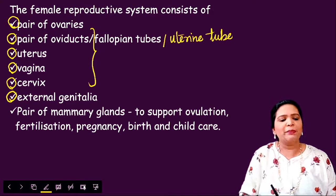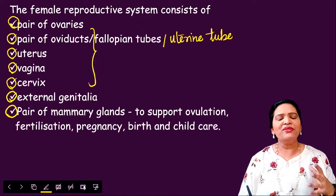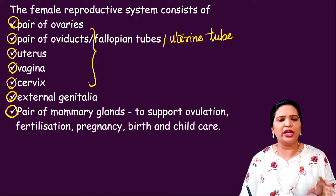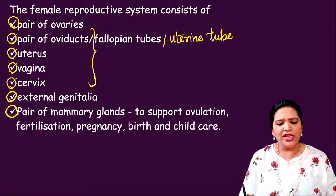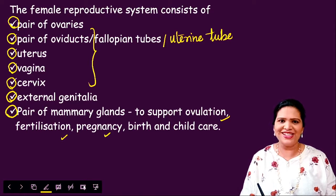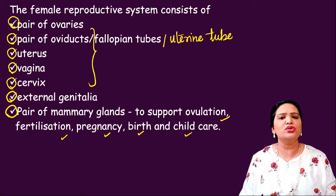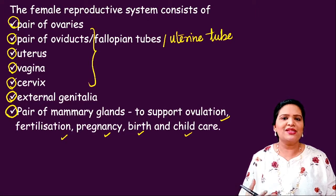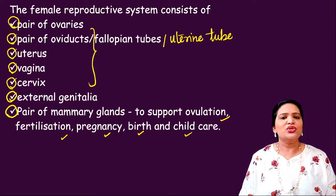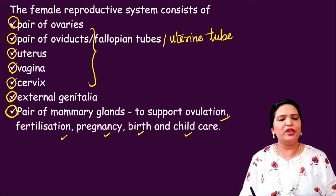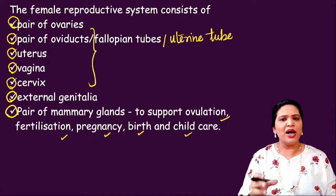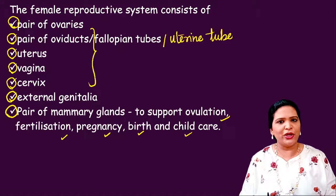There are also external reproductive structures called external genitalia, which include labia majora, labia minora, hymen, and clitoris. Additionally, there are a pair of mammary glands. Mammary glands are included in the female reproductive system because they play a major role in supporting ovulation, fertilization, pregnancy, birth, and child nutrition for up to two years after birth.